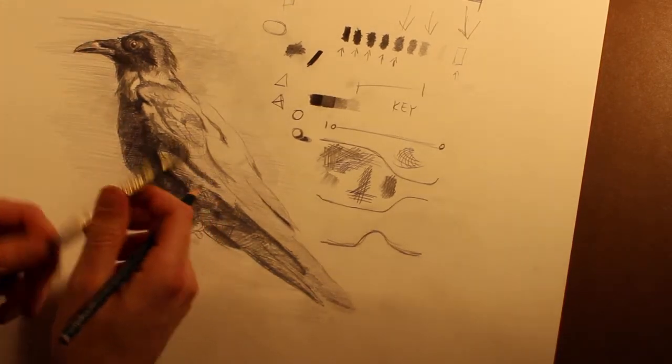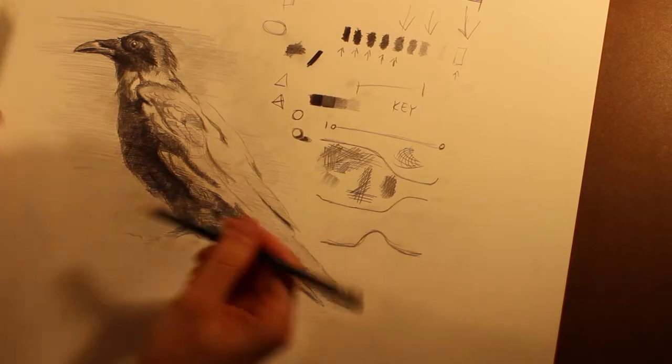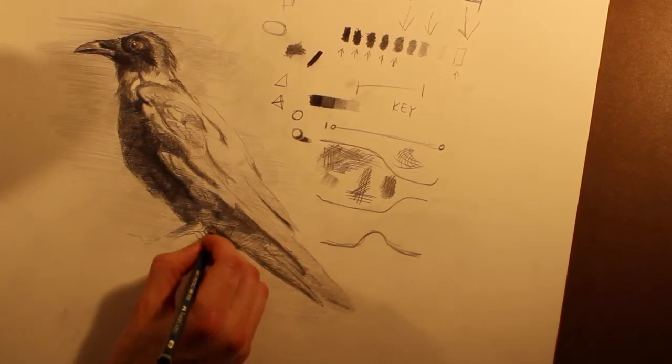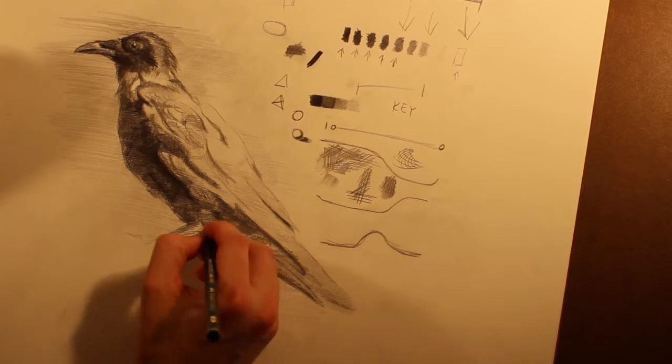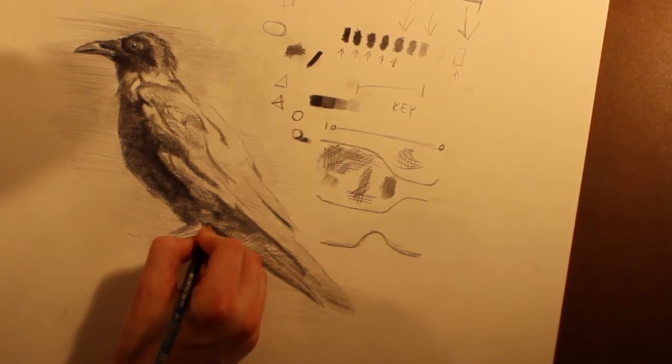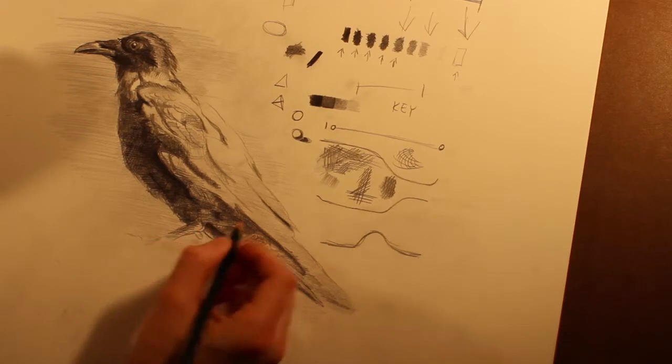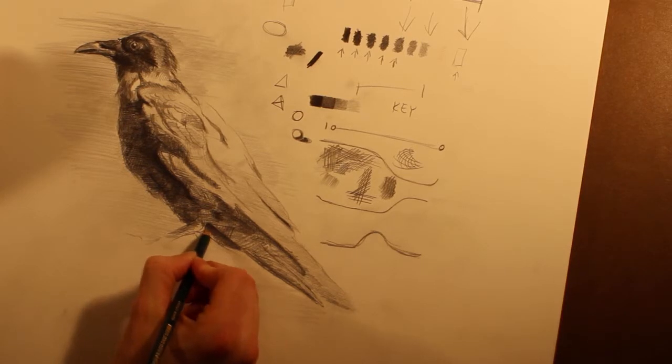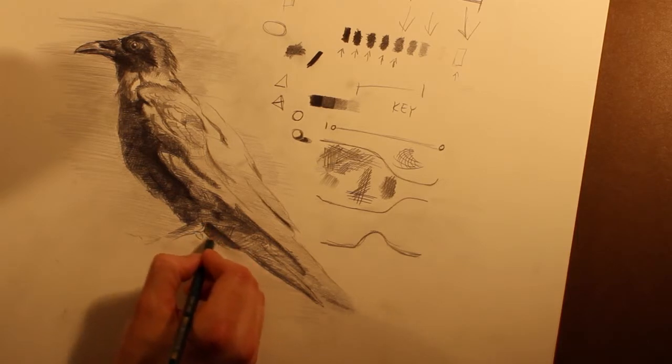So whenever you're drawing, really what you're looking for is anything that will clue you into form. That's really important. So right here I'm looking at the crow again and I'm seeing that this value pops the form of the leg forward where the leg kind of meets the body and is hidden by the feathers a little bit.